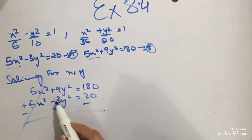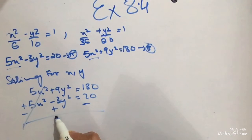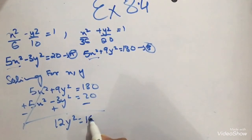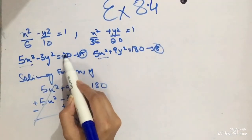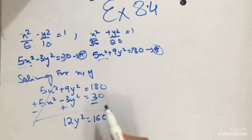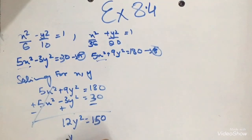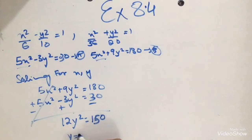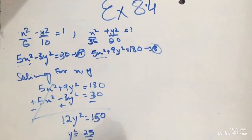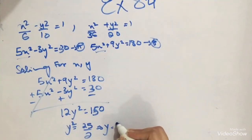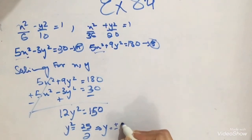After subtracting, I get 12y squared equals 180 minus 20, which is 160. Wait — let me recalculate: 180 minus 30 equals 150. So 12y squared equals 150, and simplifying, y squared equals 25 upon 2. Taking the square root gives y equals plus or minus 5 upon root 2.